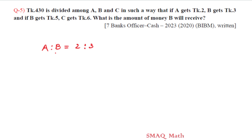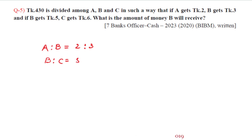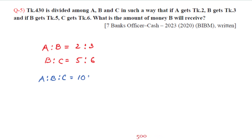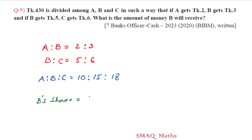If A gets taka 2, B gets taka 3. If B gets taka 5, C gets taka 6. So the ratio A to B to C is established. B gets taka 150 out of the total 430.